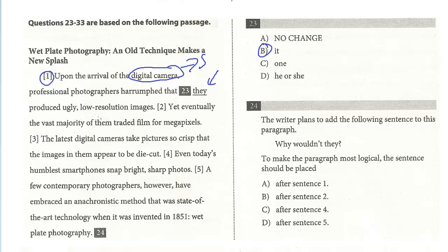Yet eventually the vast majority of them traded film for megapixels. The latest digital cameras take pictures so crisp that the images appear to be die cut. Even today's humblest smartphones snap bright, sharp photos. A few contemporary photographers, however, have embraced an anachronistic method that was state-of-the-art technology when it was first invented in 1851 — Wet Plate Photography.